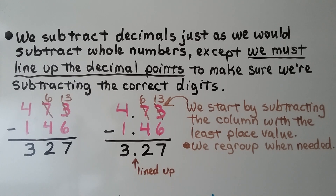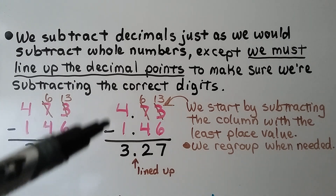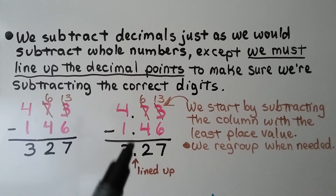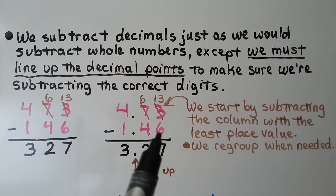We subtract decimals just as we would subtract whole numbers, except we must line up the decimal points to make sure we're subtracting the correct digits. We have 473 minus 146 and we get 327. We're going to do the same thing with the decimals — the only difference is we have decimal points lined up. We start by subtracting the column with the least place value. Here we started with the ones; here we're going to start with the hundredths. And we regroup when needed. We have 3 and 27 hundredths.